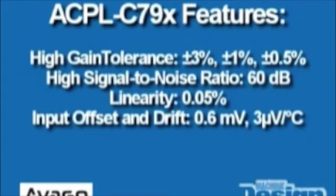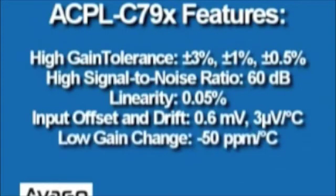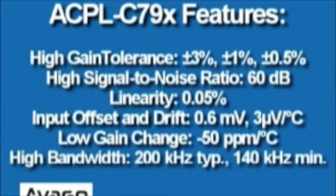low input offset voltage drift 0.6 millivolts and 3 microvolts per degree Celsius, low gain change versus temperature negative 50 ppm per degree Celsius, high bandwidth 200 kilohertz typical, 140 kilohertz minimum.